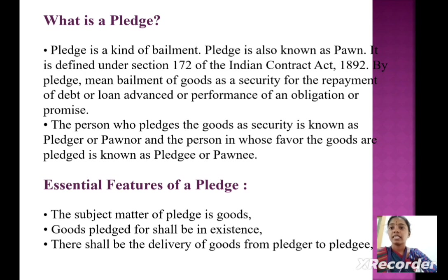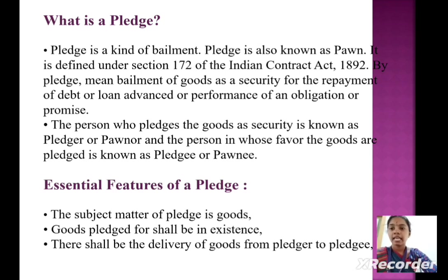What is a pledge? It is a kind of bailment, also known as pawn. It is defined under Section 172 of the Indian Contract Act, 1872. By pledge we mean bailment of goods as a security for the repayment of a debt or loan advanced, or performance of an obligation or promise. The person who pledges the goods as security is known as pledgor or pawnor. The person in whose favor the goods are pledged is known as pledgee or pawnee. Essential features of a pledge: the subject matter of the pledge is goods; goods pledged shall be in existence; and there shall be delivery of goods from pledgor to pledgee.